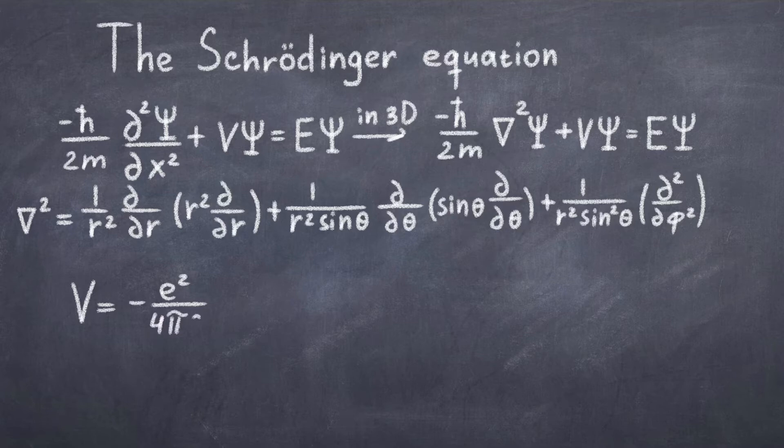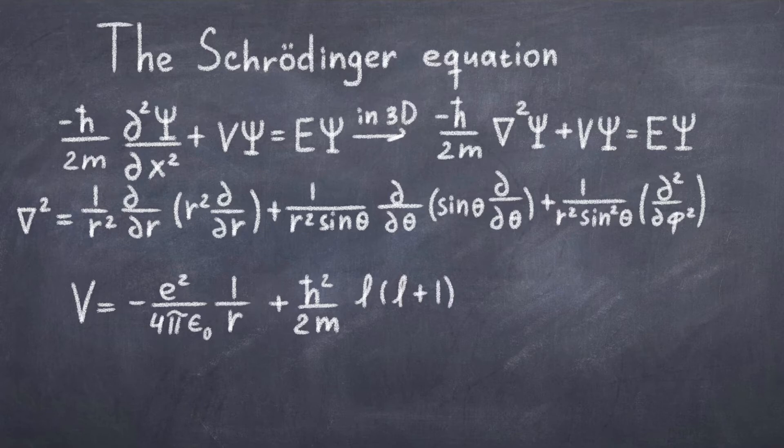Since the hydrogen atom is symmetric, the potential only depends on the radius, and we can write it as V equals minus e squared divided by 4 pi epsilon naught times 1 over r, plus h-bar squared divided by 2m times l in brackets l plus 1 divided by r squared.